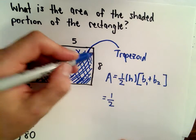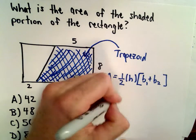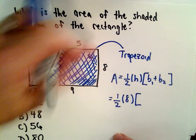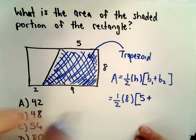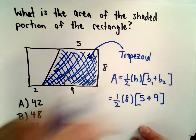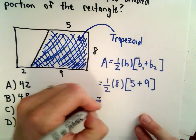So in this case, the height is going to be the value of 8. One of our bases has a length of 5, the other base has a length of 9, so now it's just a matter of doing the arithmetic.